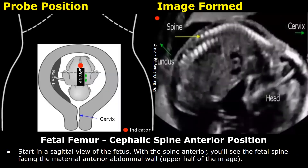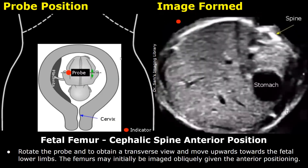This probe positioning and image formation are for a fetus in a cephalic presentation with an anterior spine position. After starting in a sagittal view of the fetus, the spine will be seen in the upper half of the image and the fetal head will be on the right side of the image. Next, rotate the probe to obtain a transverse view and move upwards slowly. This image is at the fetal stomach level — keep moving upwards slowly to find the fetal legs.